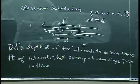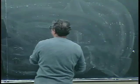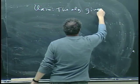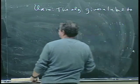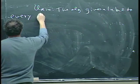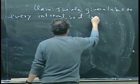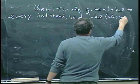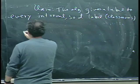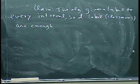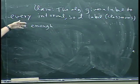So here's our claim. The algorithm gives a label to every interval. So D labels or classrooms are sufficient. And sufficient is spelled E-N-O-U-G-H. D labels or classrooms are enough.